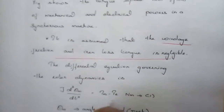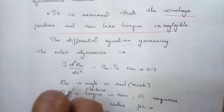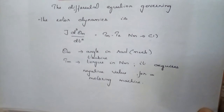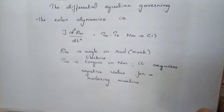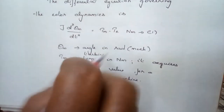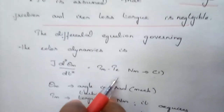For governing the equation, let us take the differential equation of rotor dynamics. This equation we have discussed already in the case of the dynamics of synchronous machine. The rotor dynamics equation is given by J d²θm/dt², which is equal to the mechanical torque minus the electrical torque.